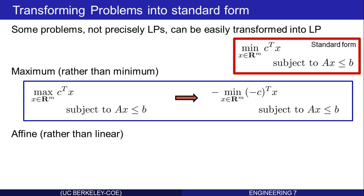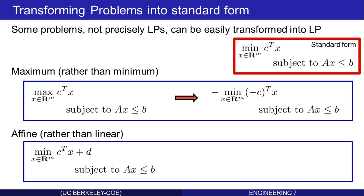What about an affine objective rather than linear? Minimize C transpose X plus D — notice the plus D — subject to linear inequality constraints. Clearly the minimization is unaffected by D; that's just a constant offset. So move the D outside and add that to the minimization. This optimization is equivalent to the original one: it involves D plus the solution to a linear program in standard form. Those are easy transformations.